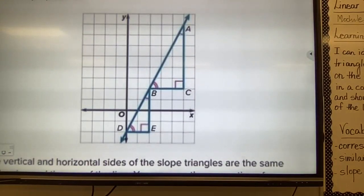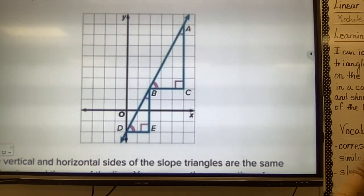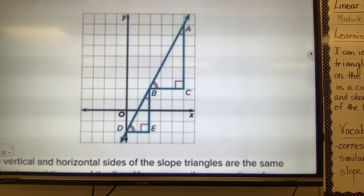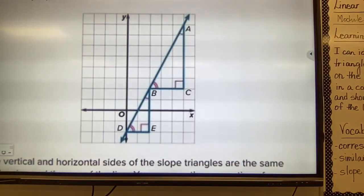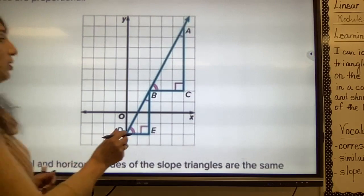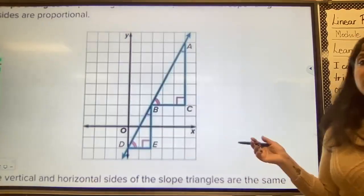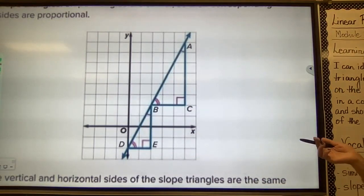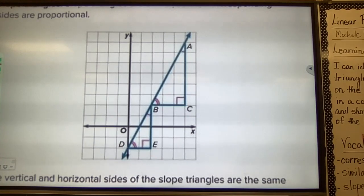Now let's look at similar triangles and slope. Triangle ABC and triangle BDE both fall on the same line on the coordinate plane. These right triangles are called slope triangles. The vertical and horizontal sides of the slope triangles are the same as the rise and the run of the line. You can use the properties of similar triangles to show the ratios of rise to run for each triangle are equal.